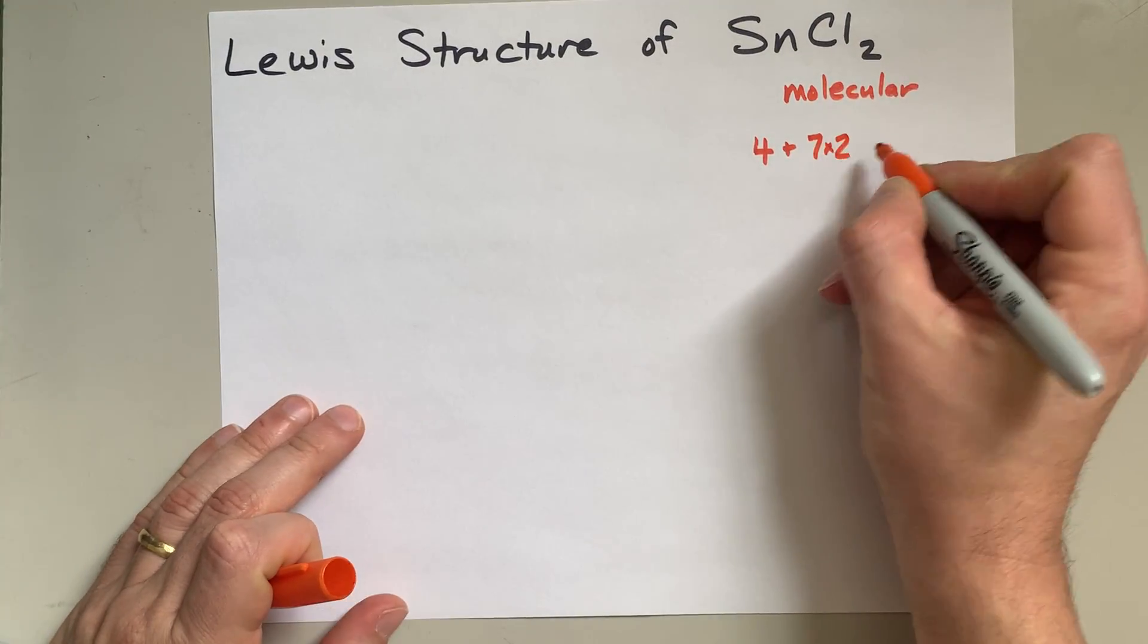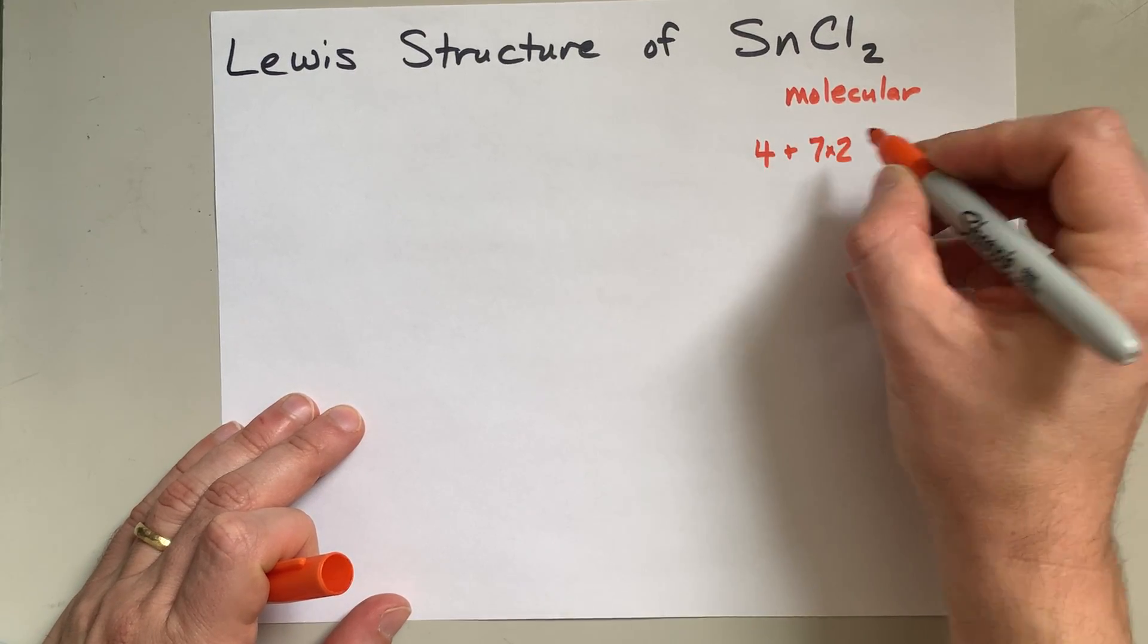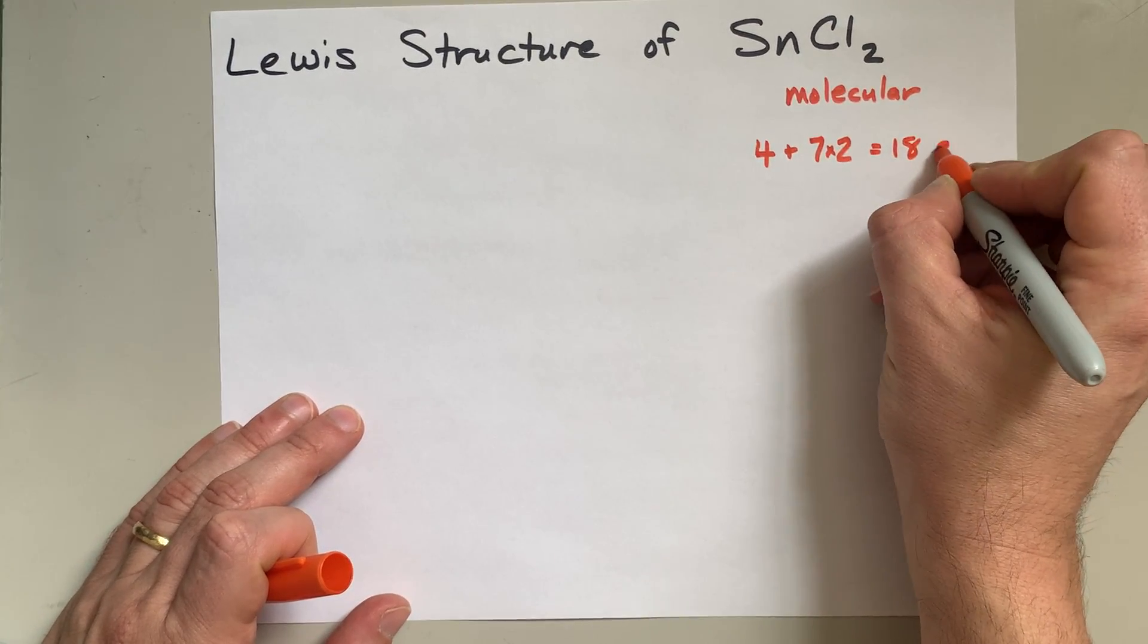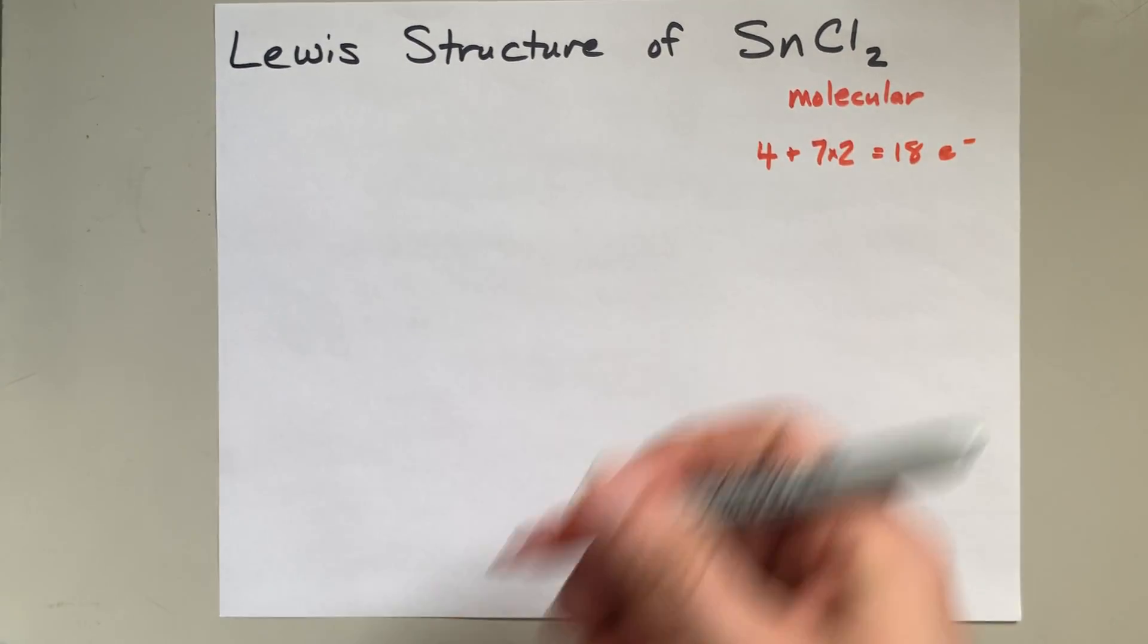Now, there are two of them, so that's 14 plus the extra four, which makes 18 electrons that we're going to have to deal with in this structure.